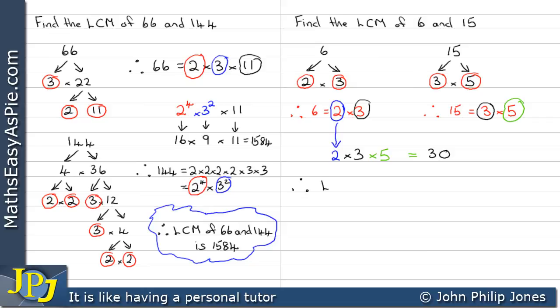When we multiply all that together, we get 30. Therefore, the lowest common multiple of 6 and 15 is, in fact, 30.